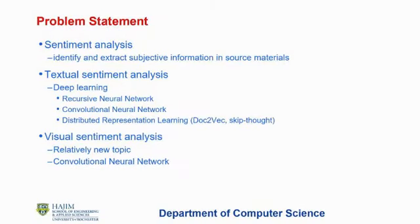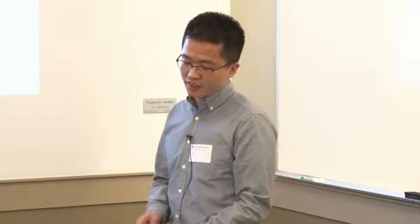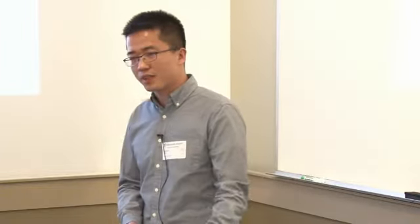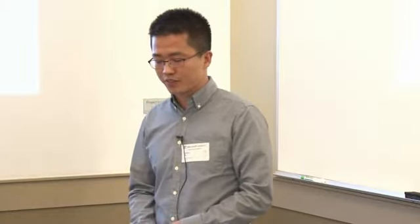Let's start with sentiment analysis. The definition is: identify and extract subjective information in source materials. For text sentiment analysis, there has been a lot of existing work, especially in the deep learning era — people have developed recursive neural networks, convolutional neural networks, and unsupervised learning frameworks such as doc2vec and skip-thought. On the other hand, visual sentiment analysis — defined as the perceived emotional response when you see a picture — has been a relatively new topic with very limited work when we started. Due to the success of deep learning, especially CNNs in computer vision, this task became more tractable.